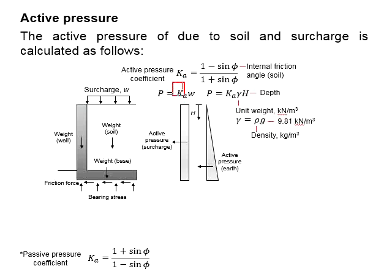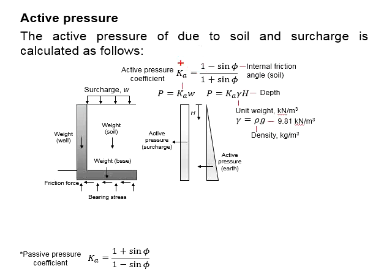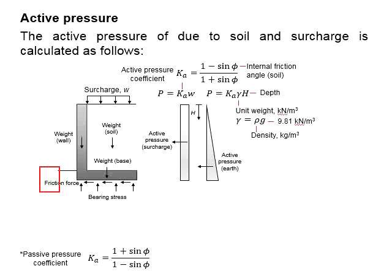Ka represents the active pressure coefficient. It is a function of the internal frictional angle of the soil, and the equation is given here. Under normal circumstances, the passive pressure is normally ignored in the analysis of the stability of the retaining wall.